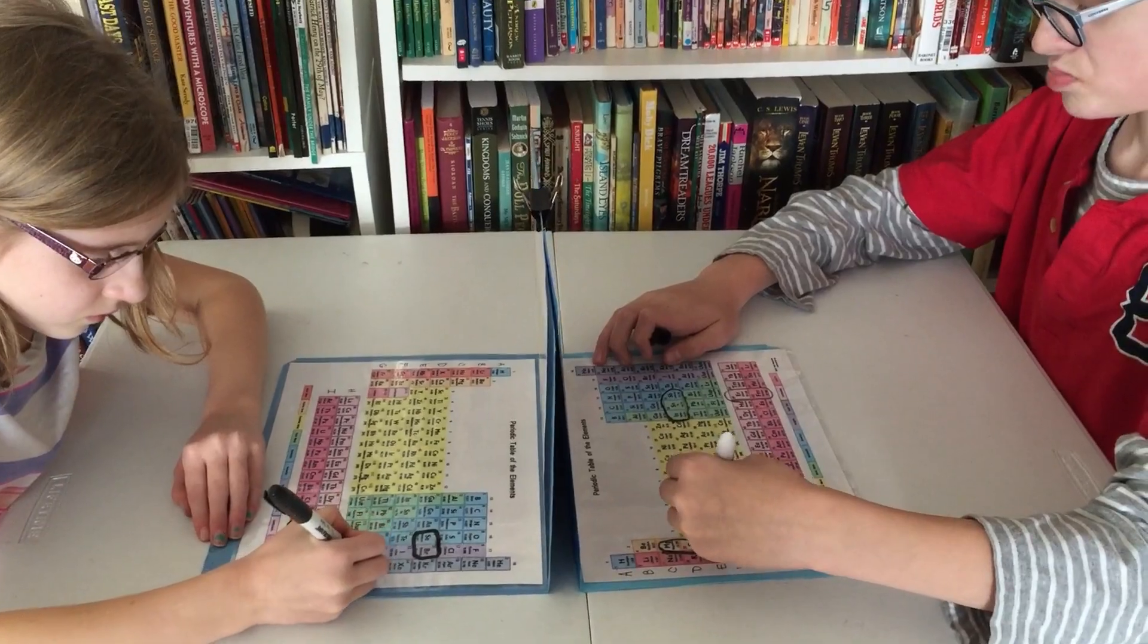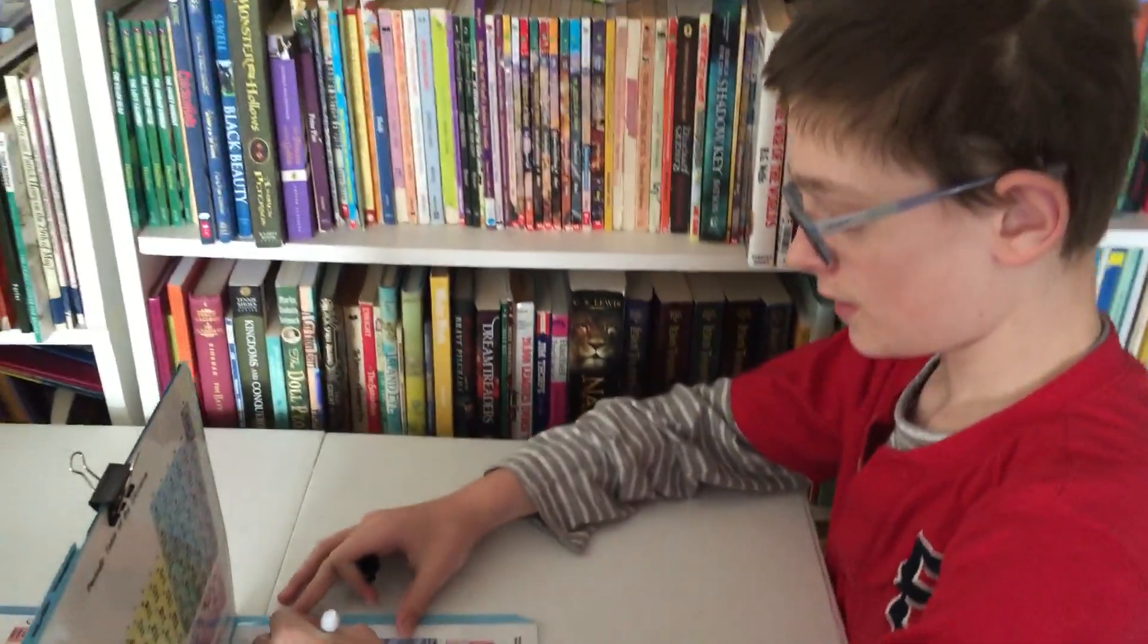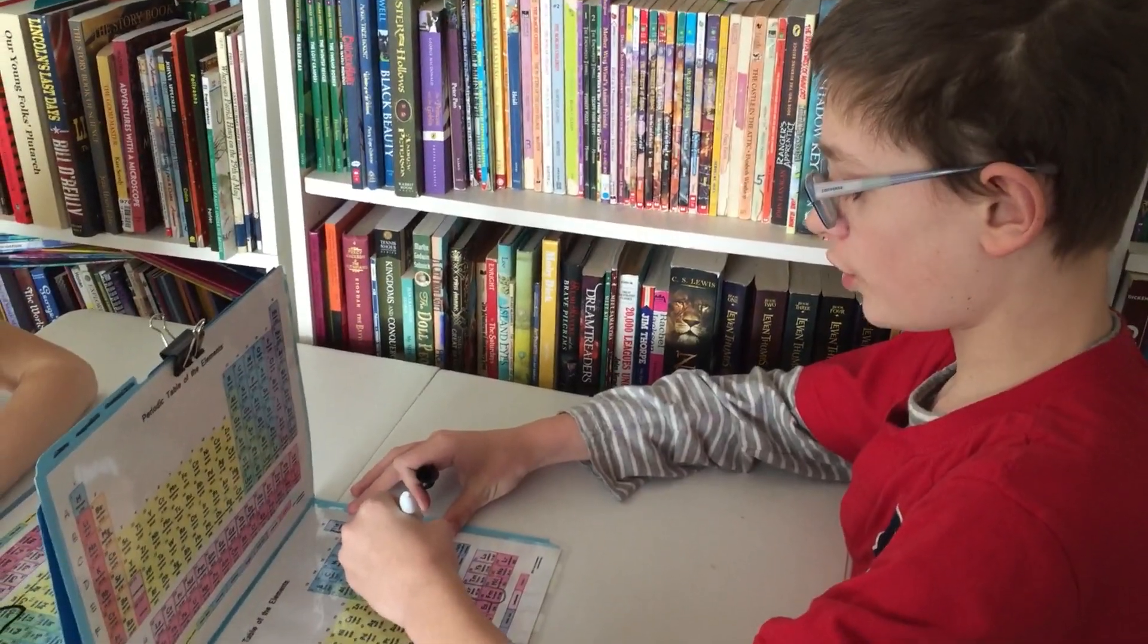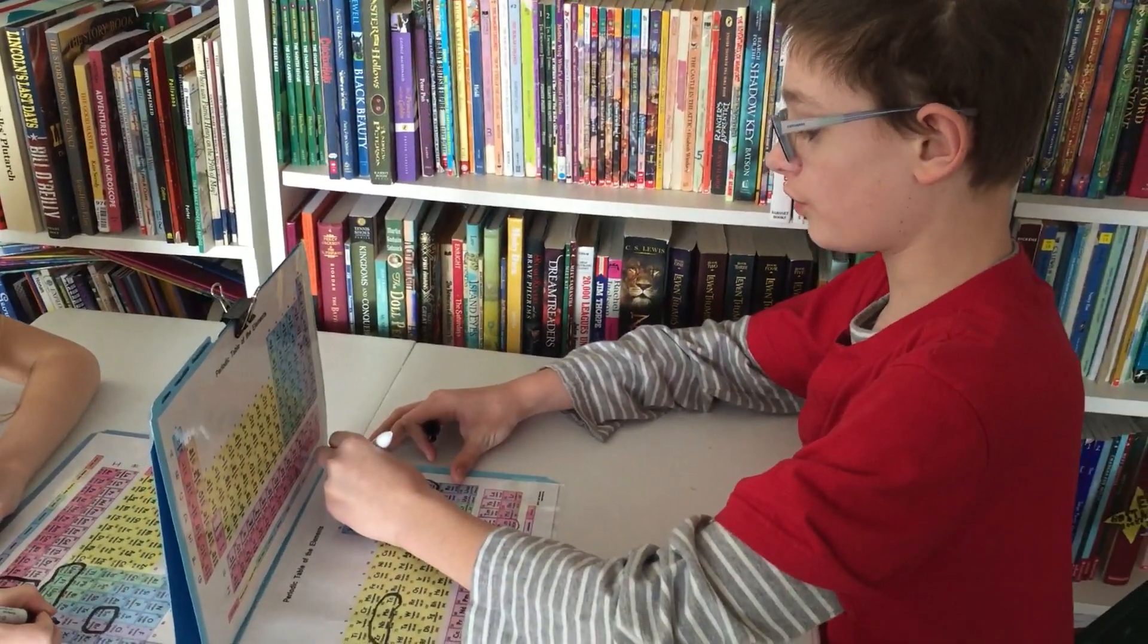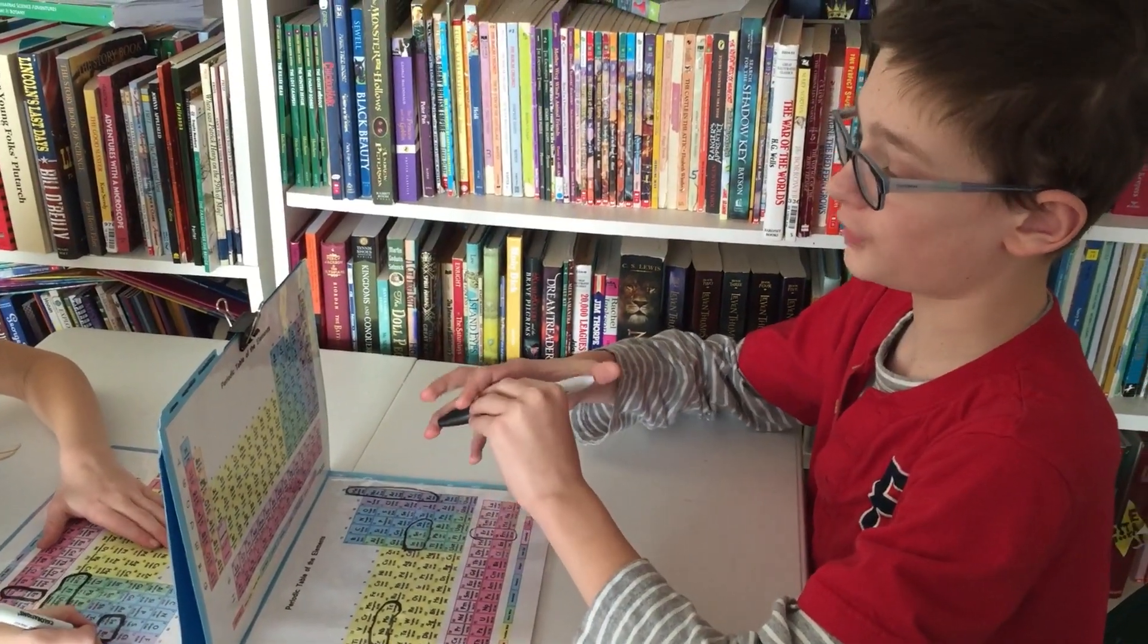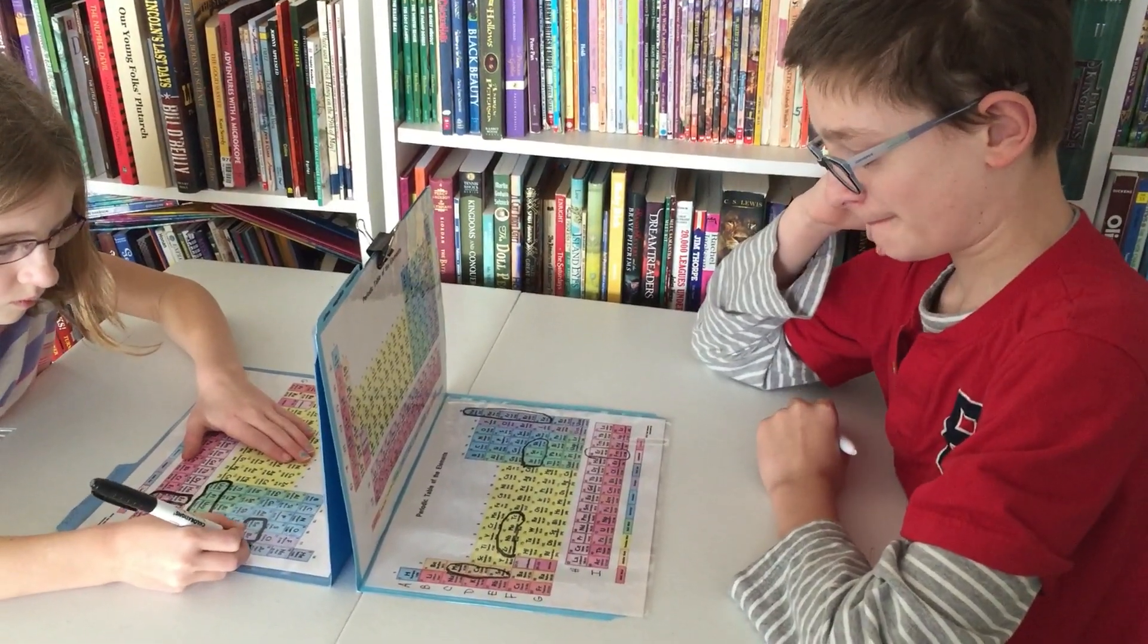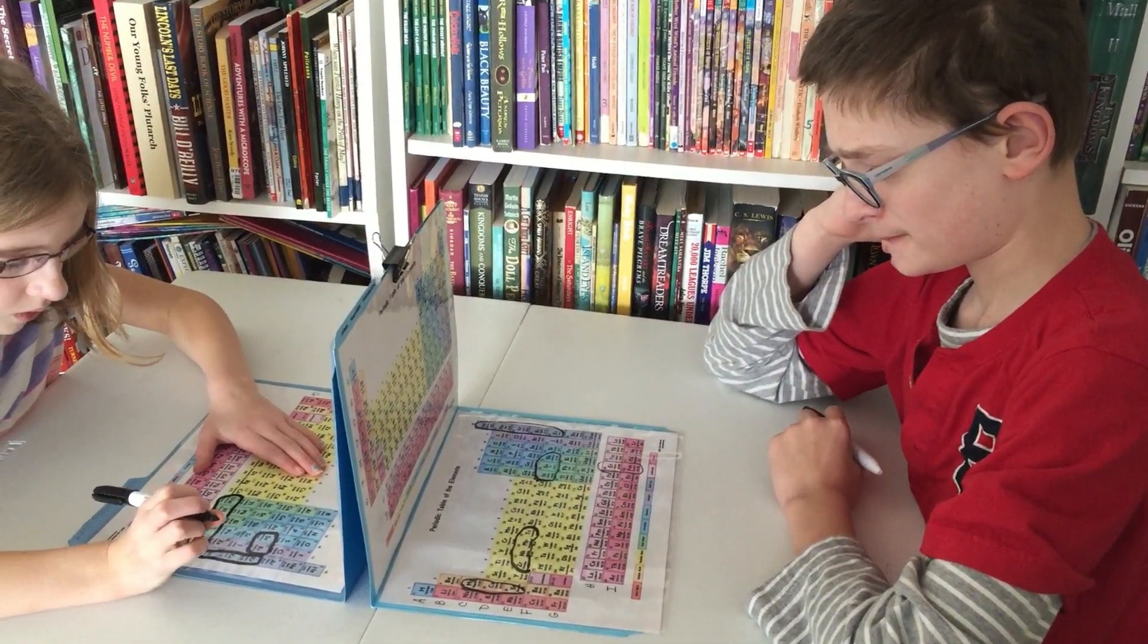The kids are using dry erase markers to circle their battleships on the bottom one. They're circling one group of five squares, one group of four squares, two groups of three squares, and one group of two squares. They can go up or down or sideways but not diagonal.